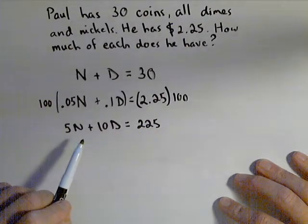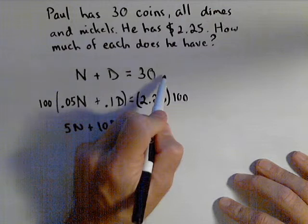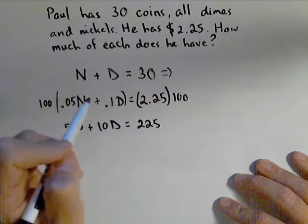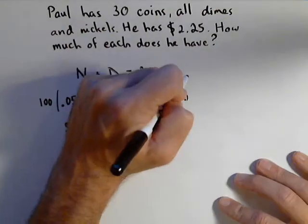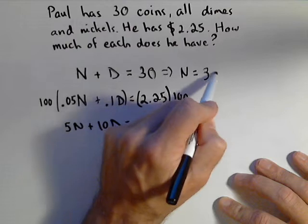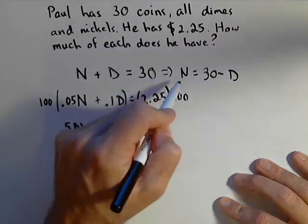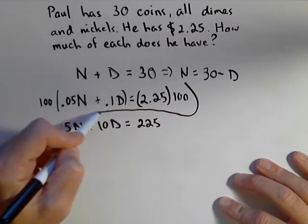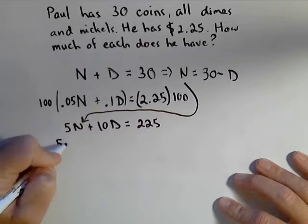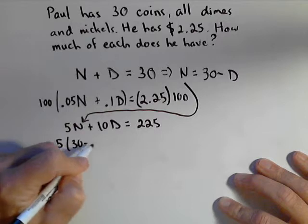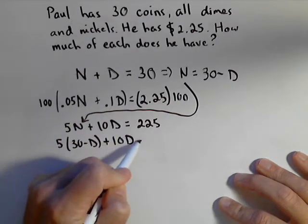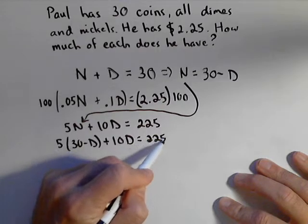And this actually isn't too bad of a system to solve. In fact, let's do it real quick with substitution. So let's solve it for N. So I know that N equals 30 minus D. And I'm going to plug that in for N, hence the substitution.